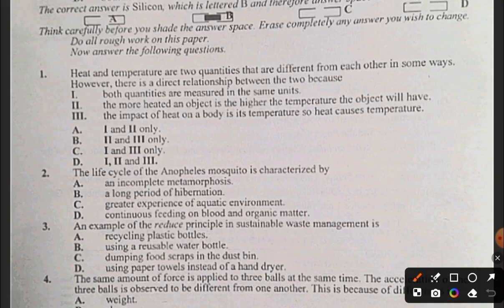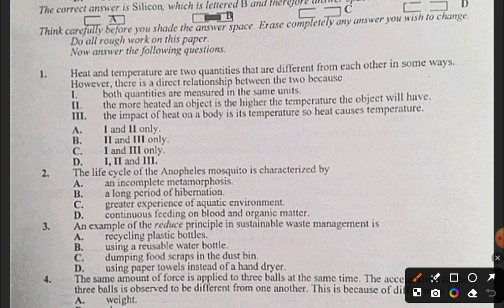Question 1: Heat and temperature are two quantities that are different from each other in some ways. However, there's a direct relationship between the two. Looking through the options: option one is wrong, but option three is right - the more heated an object is, the higher the temperature, and the impact of heat is its temperature. So the answer to question one is B.